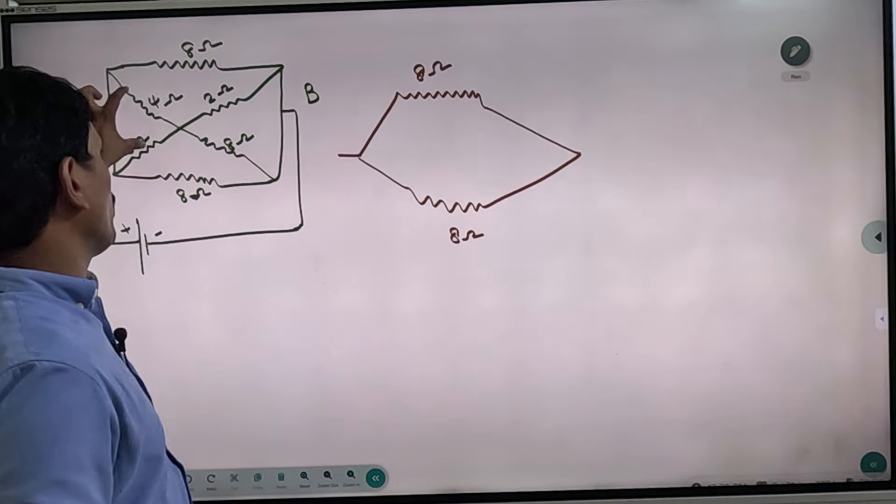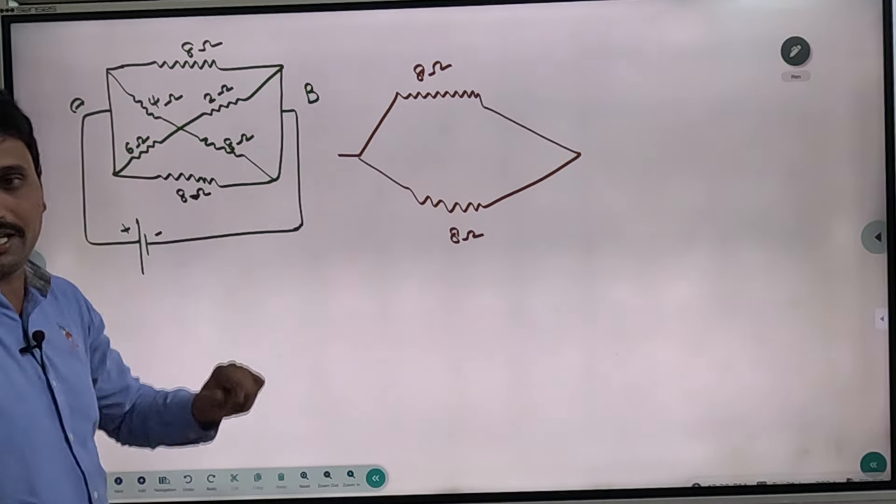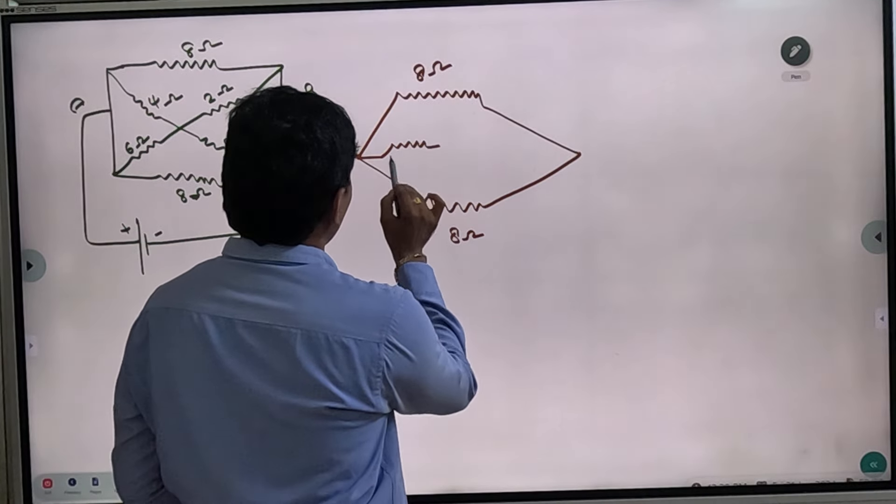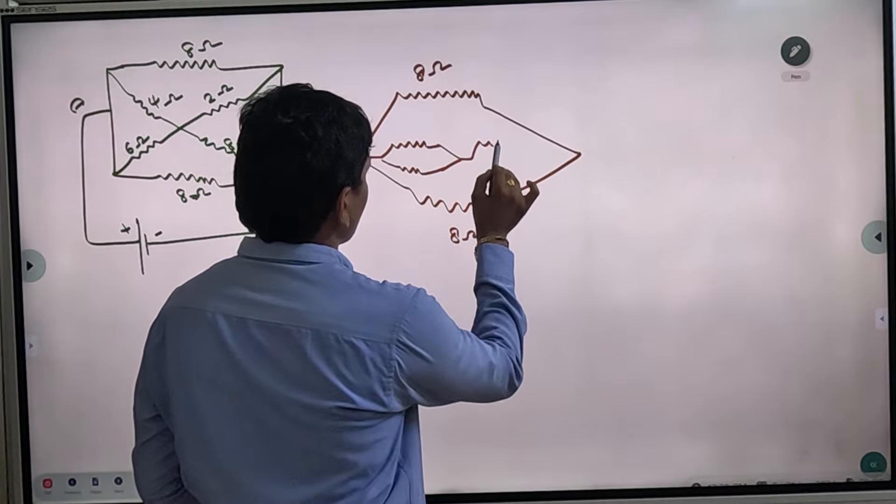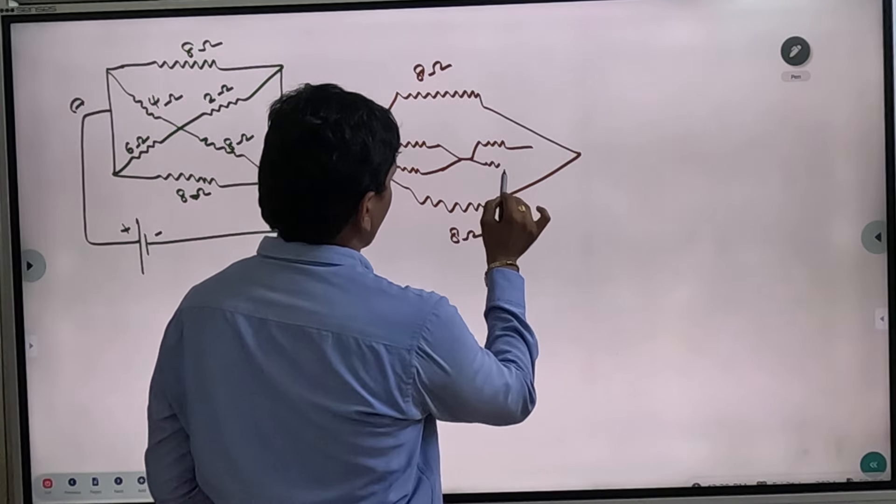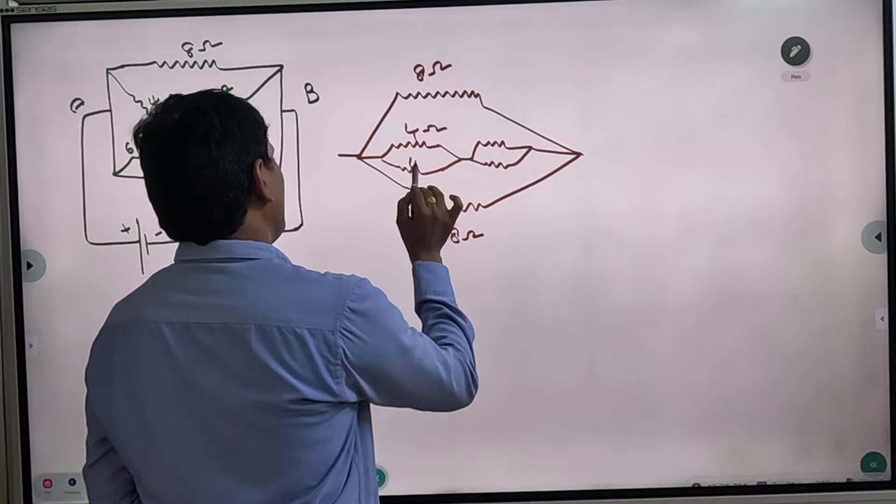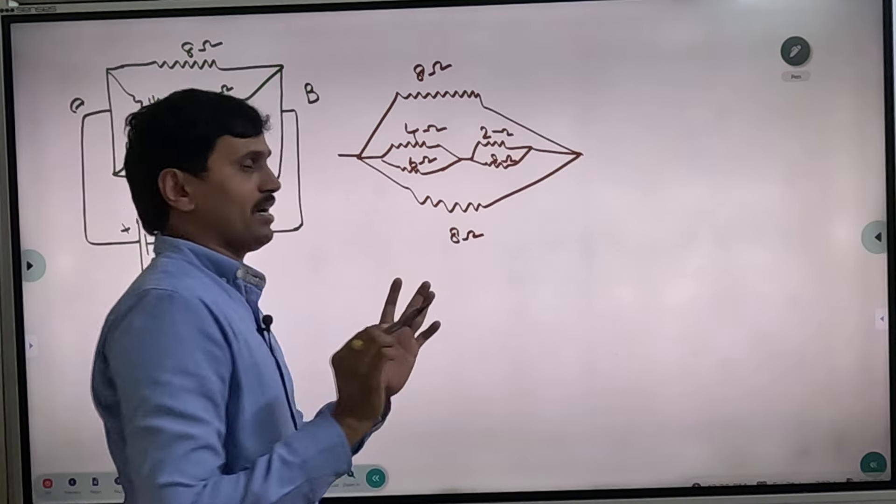2 ohms are also parallel. If this component is parallel, we want to find the resultant resistance. This resistance is 4 ohm, this is 6 ohm, this is 2 ohm, this is 8 ohm.